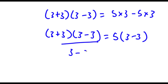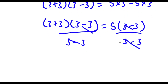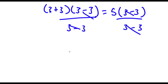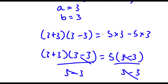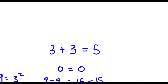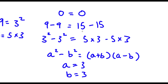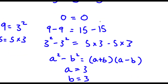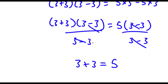Now if I divide both sides by 3 minus 3, these two cancel out and these two cancel out. So now I'm left with 3 plus 3 is equal to 5. And as you can see, we just proved this to be right: 3 plus 3 equals 5.